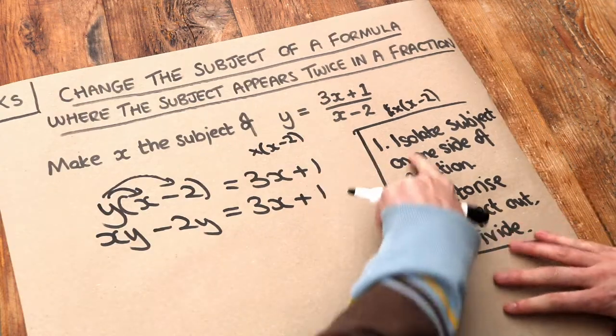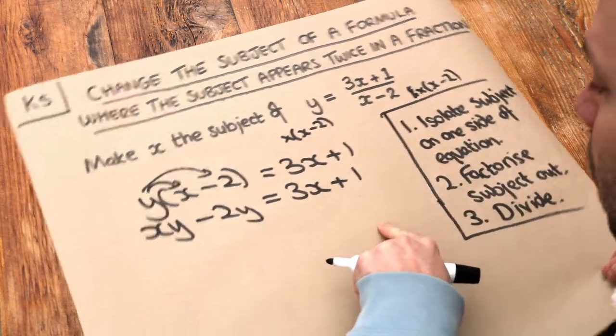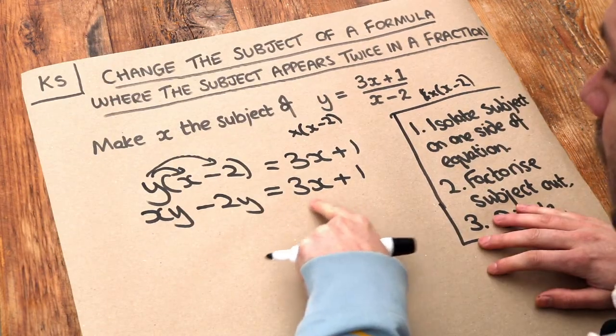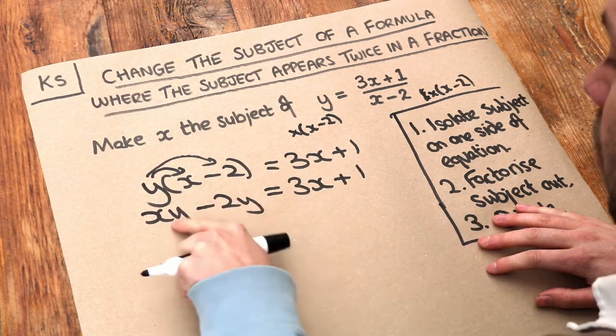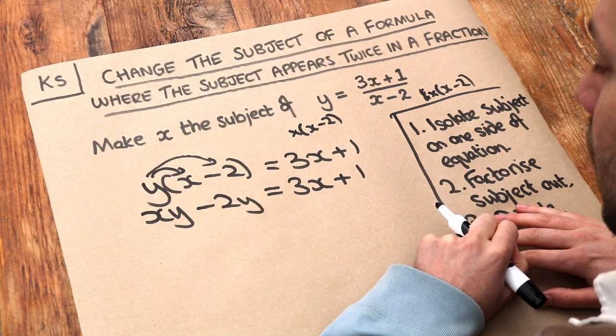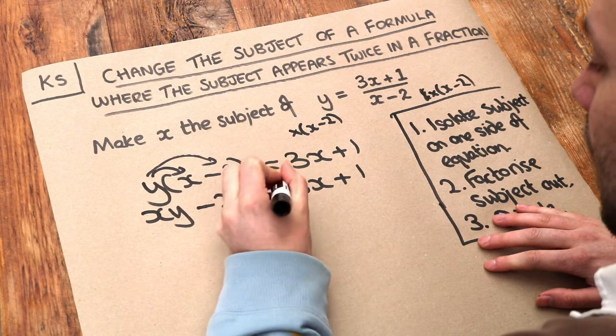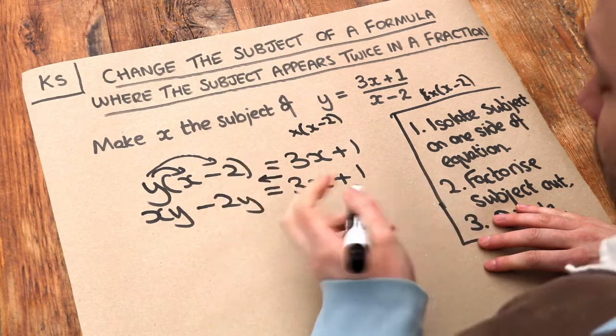And we get a problem that we've seen similar ones in previous videos. So we want to now isolate the subject on one side of the equation. Let's decide either to get the x terms on the left-hand side of the equation or the right-hand side of the equation. I'm going to put the x terms on the left-hand side of the equation. It doesn't really matter, though.